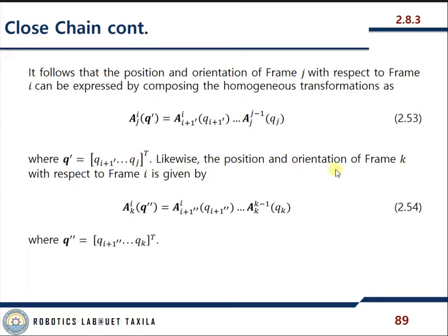Likewise, the position and orientation of frame k with respect to frame i is given by composing transformations from k to k-1, then from k-1 to k-2, and so on down to i+1 double dash to i, where q double dash is the set of variables q_i+1 double dash to q_k.